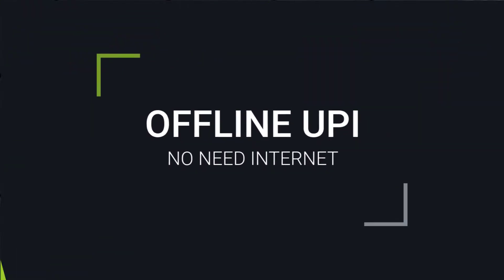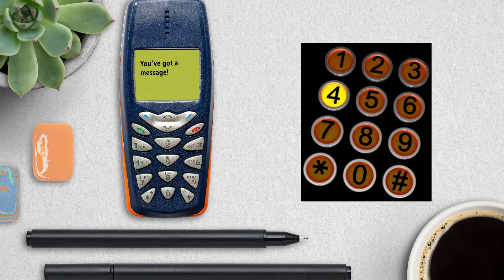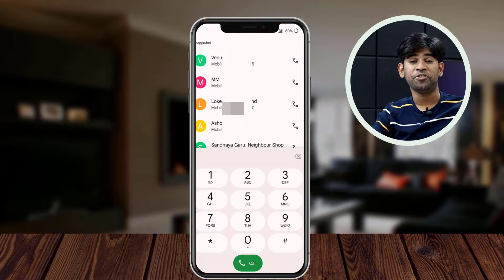We are going to use a USSD method for internet. We are going to use a normal keypad mobile phone. This is a very simple process, so follow step by step.